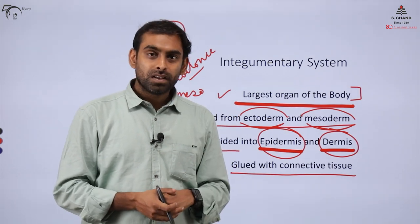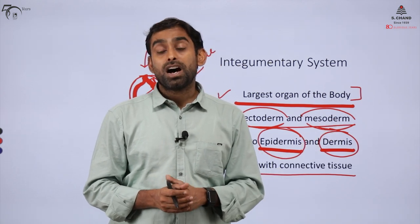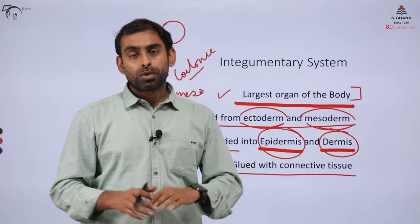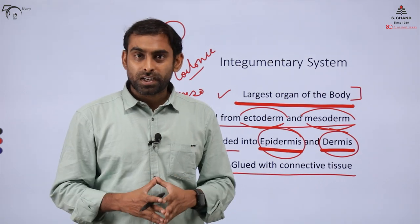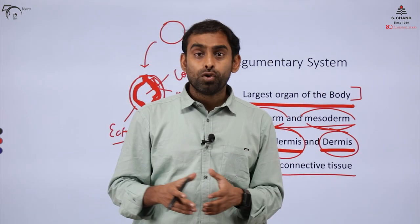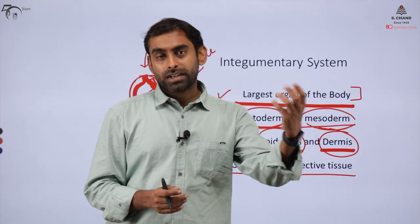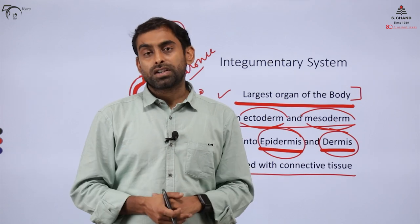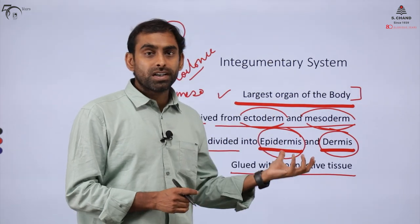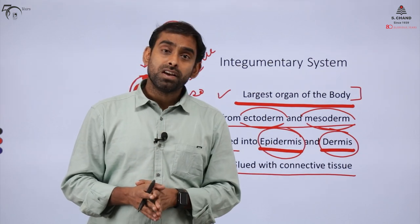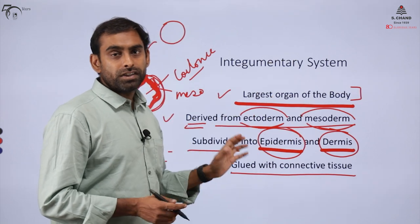Some parts of the integumentary system are modified enough to provide additional features. In some organisms, they have antlers, hooves, and nails, which help them predate or capture prey. Many components of the integumentary system also aid in survival — that is the overall feature of the integumentary system.